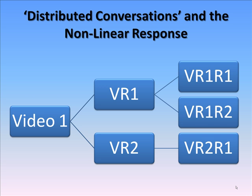Here is an example. If you imagine a normal conversation — two people talking to each other in the same room — they take it in turns to speak and then listen to each other. On the Internet, with the use of video recordings, there is a variation on this, which I will refer to as distributed conversations. So I've recorded this presentation, but someone may produce their own video response, and someone in turn may respond to their presentation. If each presentation is considered as a node, then at each node there can be several responses, as shown in the diagram.